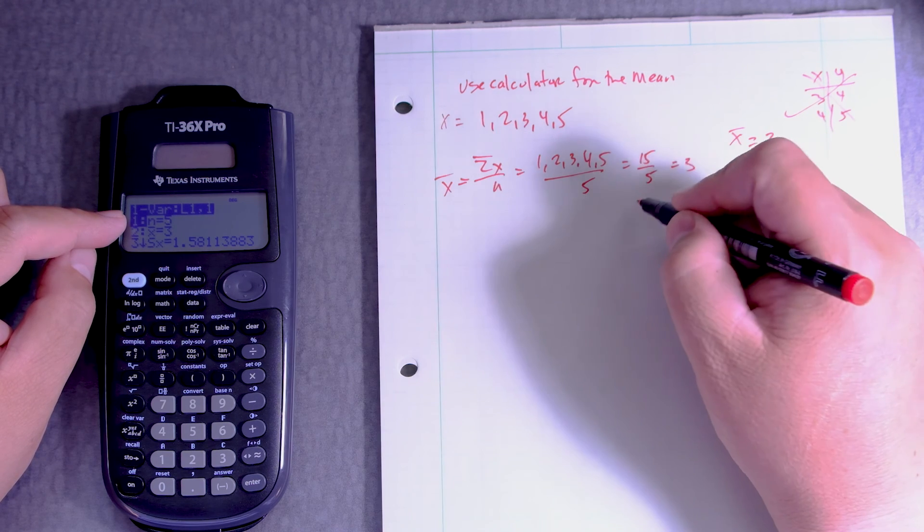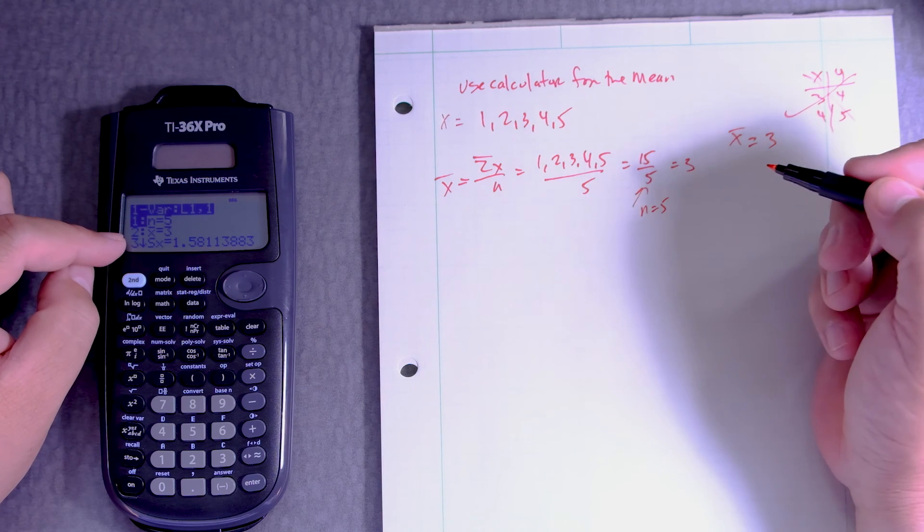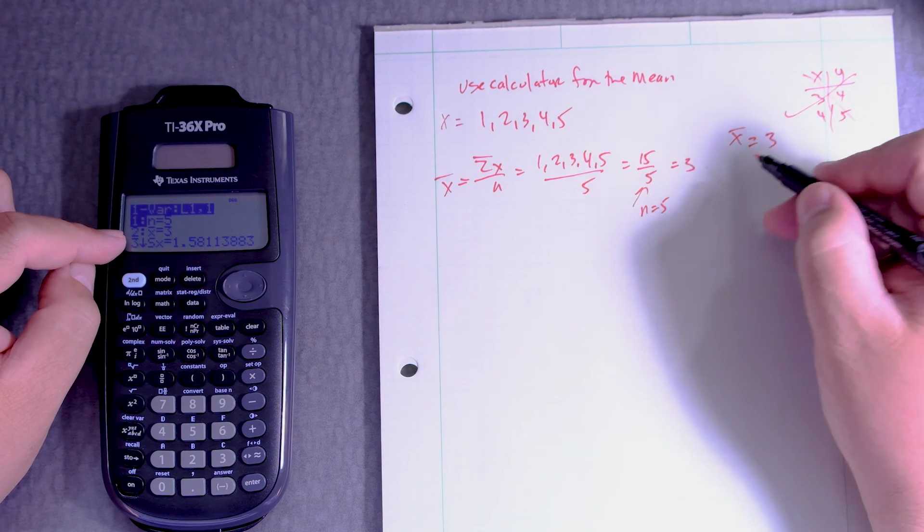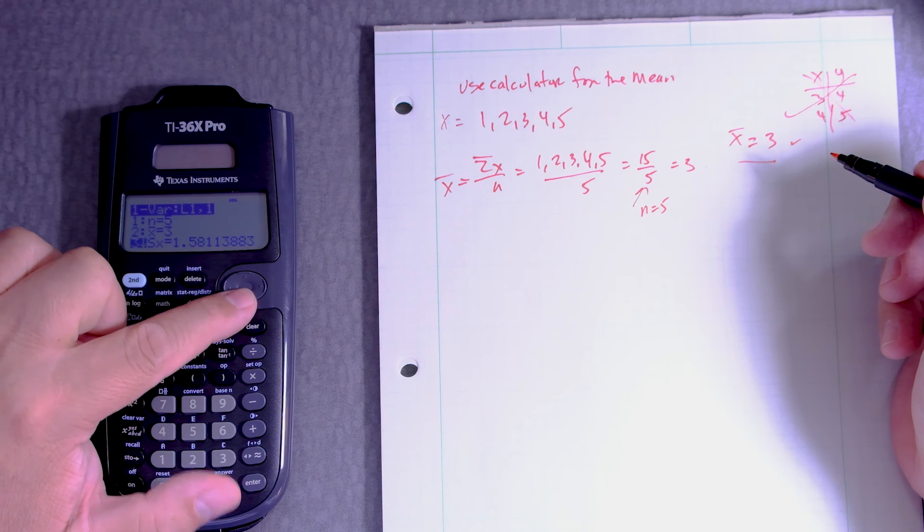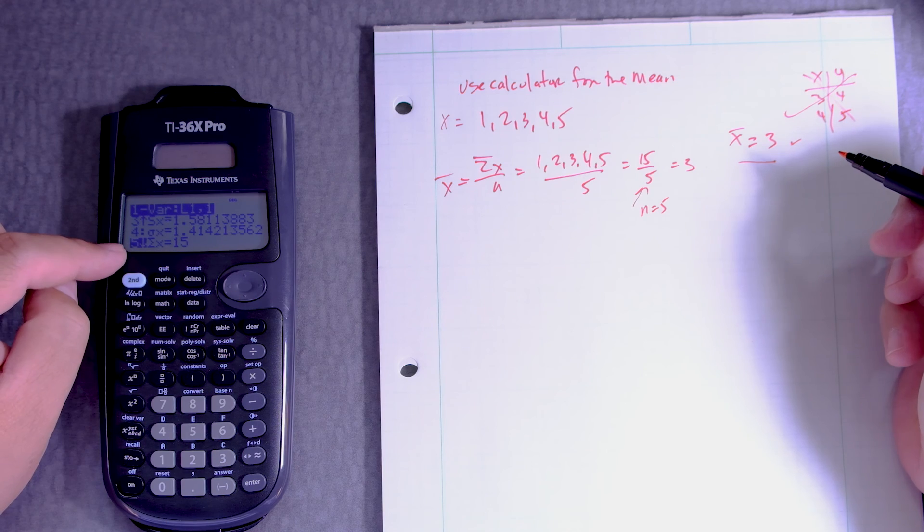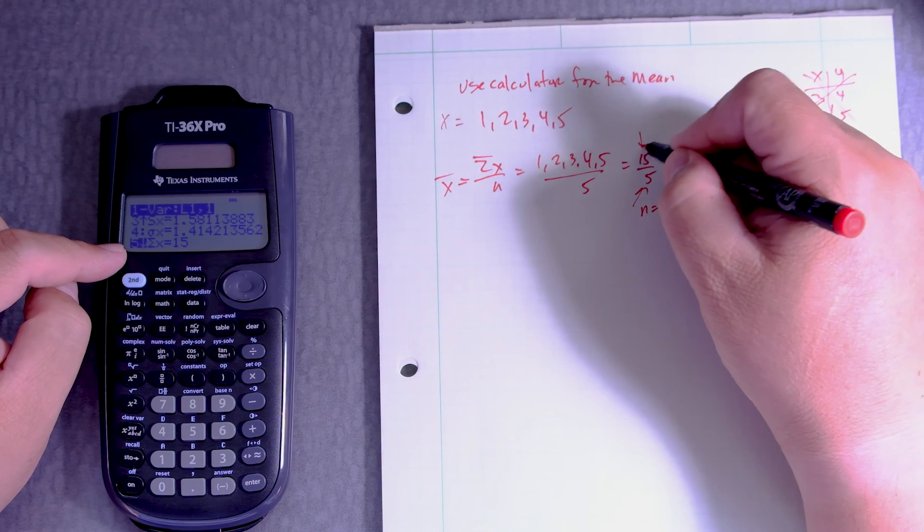n is equal to 5. That's true, n is equal to 5. And here you got x̄ which is 3. So that's right. Scroll down a little more. And it says the sum of x which is 15.